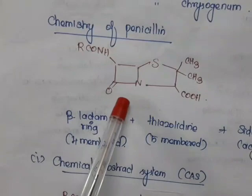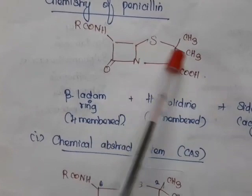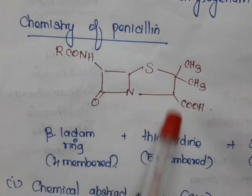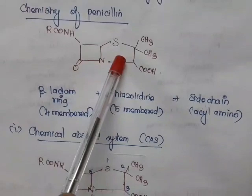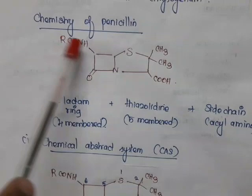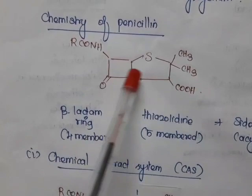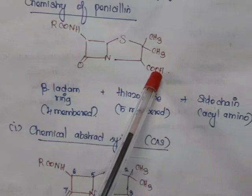The beta-lactam ring is fused with the thiazolidine ring. Thiazole is a five-membered ring having two heteroatoms — sulfur and nitrogen — at positions one and three. If it has two double bonds it is thiazole; one bond remaining makes it thiazoline; no bonds makes it thiazolidine. So penicillin is the fusion of a beta-lactam ring and a thiazolidine ring, with an acylamino side chain (R-CO-NH-), two methyl groups, and a carboxylic acid group.